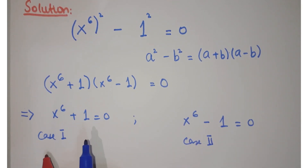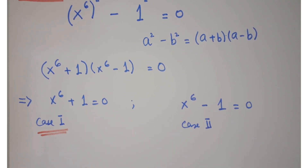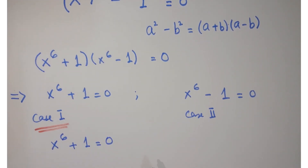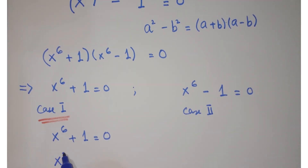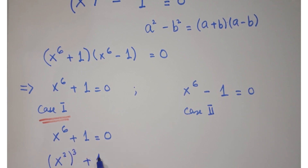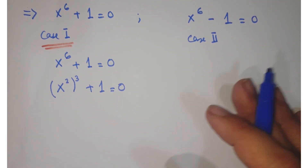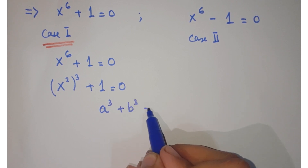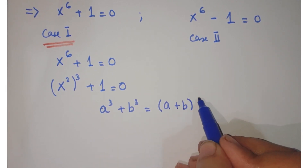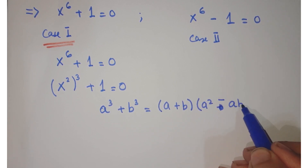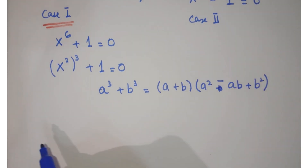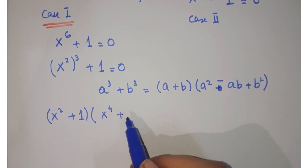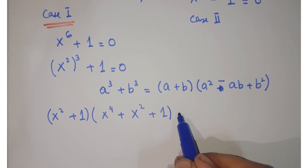Handling Case 1 first: x raised to the power 6 plus 1 equals 0. This x raised to the power 6 plus 1 can be written as x raised to the power 2, whole cubed, plus 1 cubed equals 0. Applying the algebraic identity a cubed plus b cubed equals a plus b into a squared minus ab plus b squared, you can write this as x squared plus 1, bracket x to the power 4 minus x squared plus 1, equals 0.